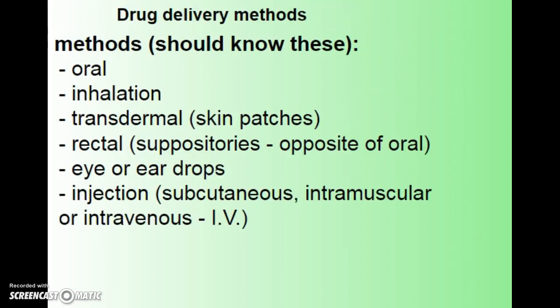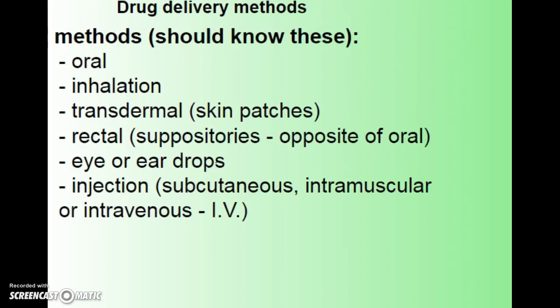Drug delivery methods are a topic guaranteed to appear on your IB test. You can take a drug orally by mouth, breathe it in through inhalation, take it through the skin transdermally with a skin patch, take it rectally as a suppository, or use eye or ear drops. Finally, there are three types of injections: into the skin (intradermal), subcutaneous (just under the skin), deep into the muscle (intramuscular), or directly into the bloodstream (intravenous or IV).